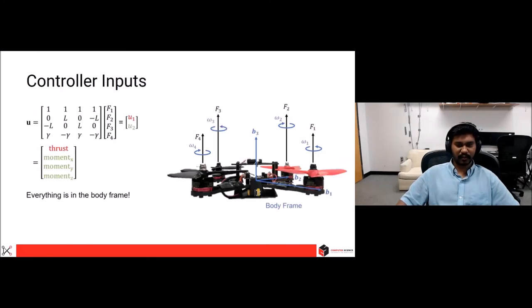Now, the controller inputs which we'll be controlling as we talked about before will basically be the whole of U1 and U2, as shown here. U1 will be the sum of all forces, F1 plus F2 plus F3 plus F4. And U2 will be the moments in X, Y, and Z direction, as shown. And note that everything here is in the body frame.